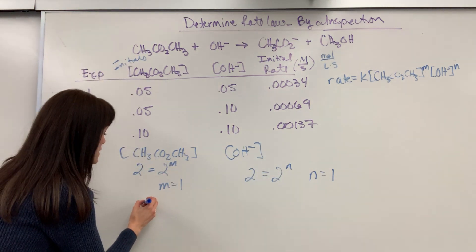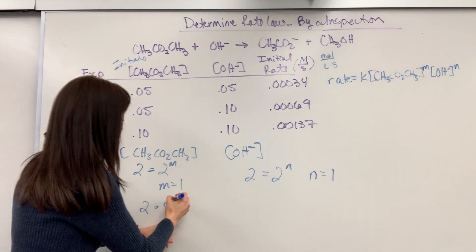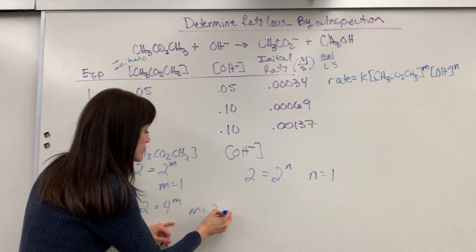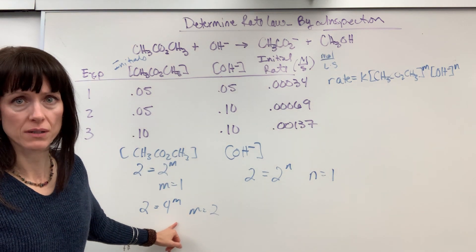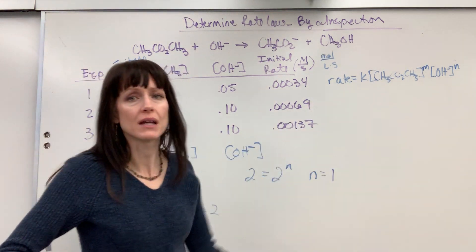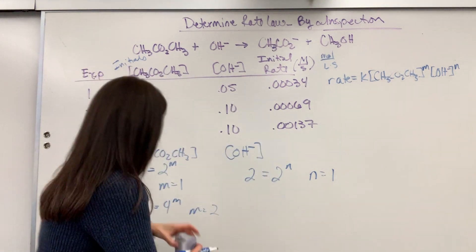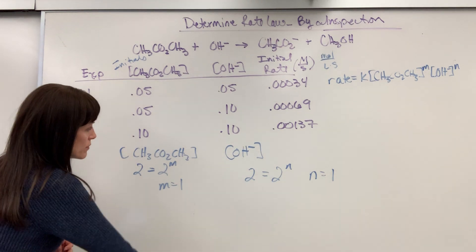If you double this, you quadruple the rate, which means M would have to be a second order. So if something is doubled and then you quadruple the rate, it means it's a second order. This one, though, we doubled and the rate doubled, so it has to be a first order reaction.